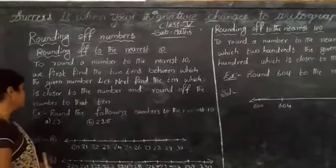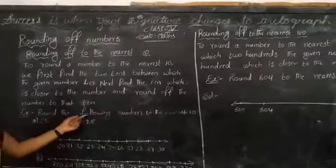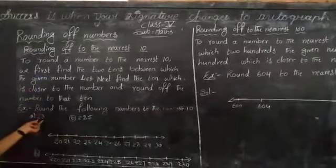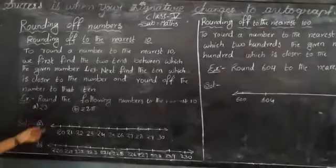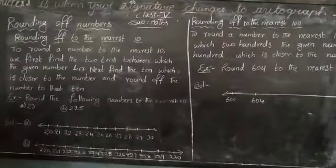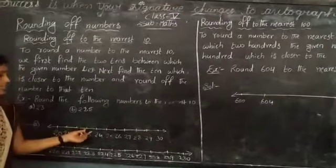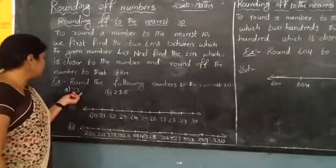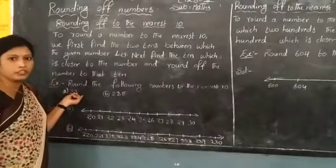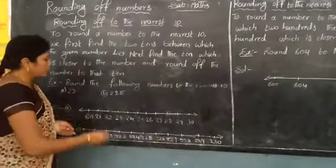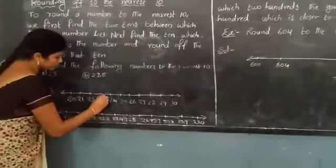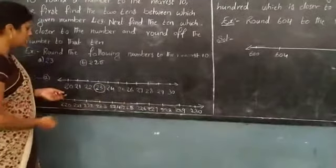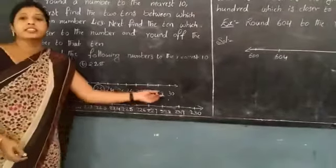For example, round the following numbers to the nearest 10. See the first question: 23. The number is 23, so mark this number. This 23 lies between the 10s 20 and 30.